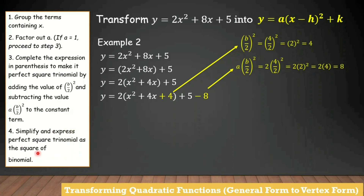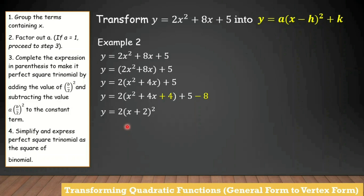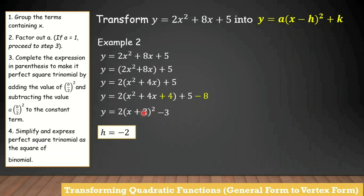Step 4: simplify and express the perfect square trinomial as the square of a binomial. Bring down the 2. Take the square root of the first term — square root of x squared is x. Copy the sign of the middle term. The square root of 4 is 2, then add the squared symbol. Then 5 minus 8 equals negative 3. This is our vertex form: y equals 2 times quantity x plus 2 squared minus 3. The vertex is h equals negative 2 and k equals negative 3, giving vertex (negative 2, negative 3).